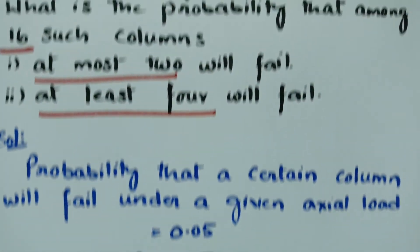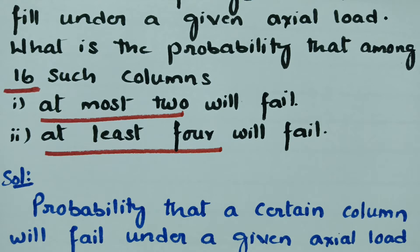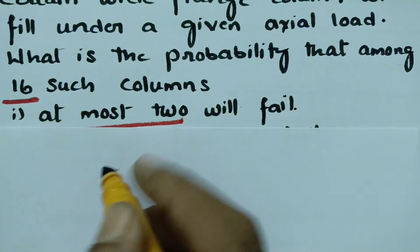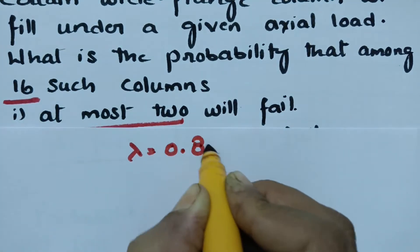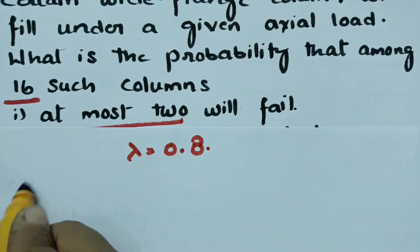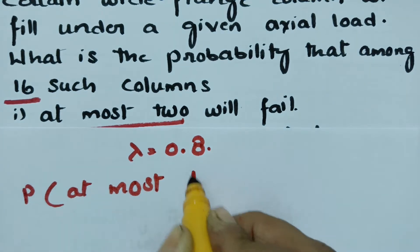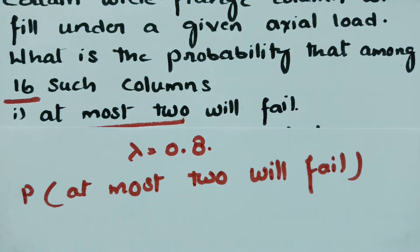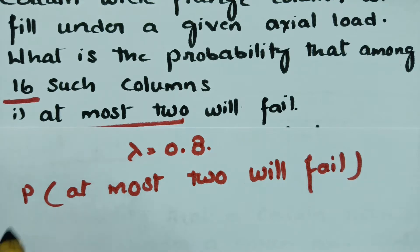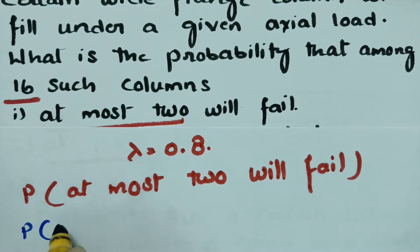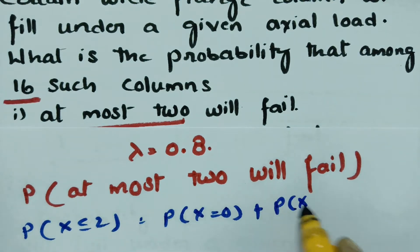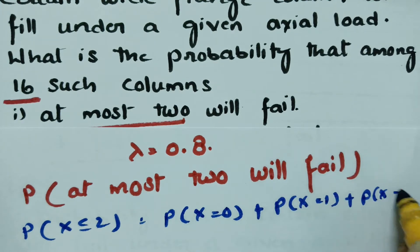Since the lambda value is given and the P value is very low, we use Poisson distribution. Lambda is equal to 0.8. We need to find the probability that at most 2 will fail, i.e., maximum 2 — minimum could be 0, 1, or 2. So X less than or equal to 2, which equals P(X=0) + P(X=1) + P(X=2).